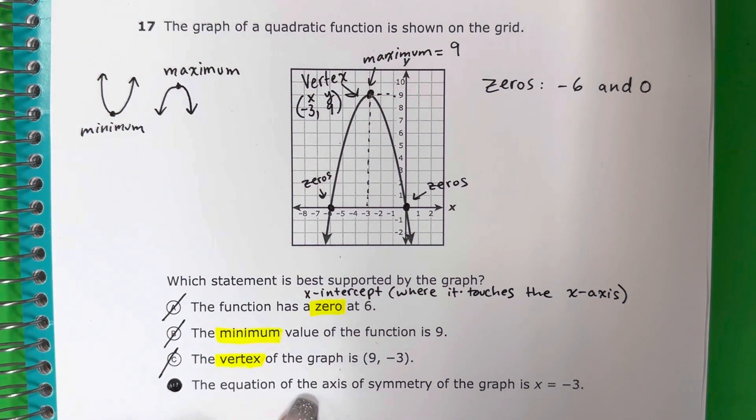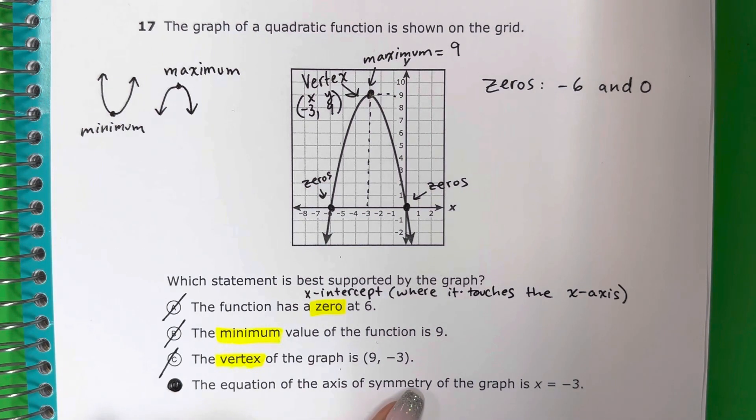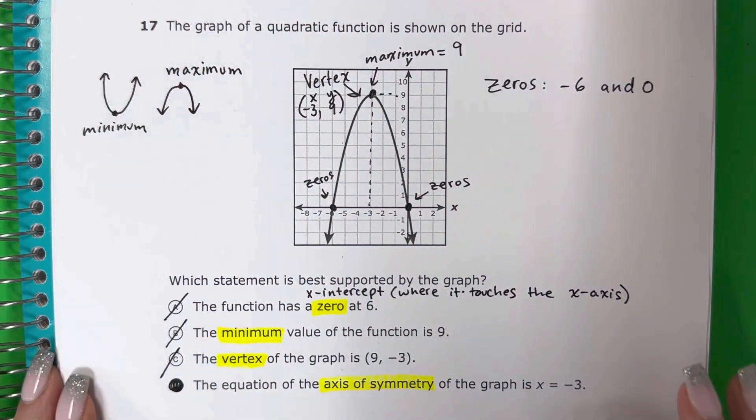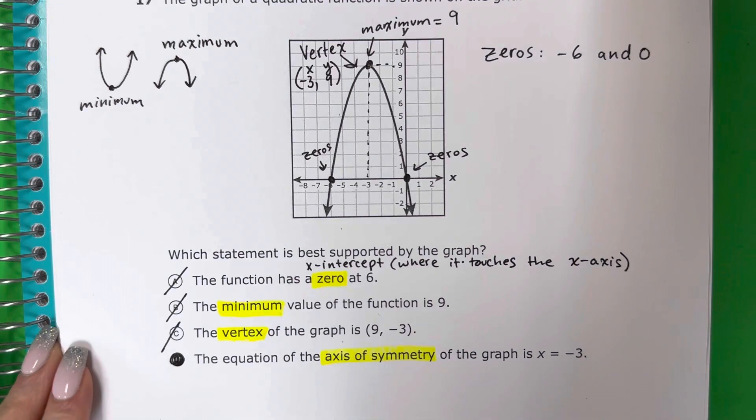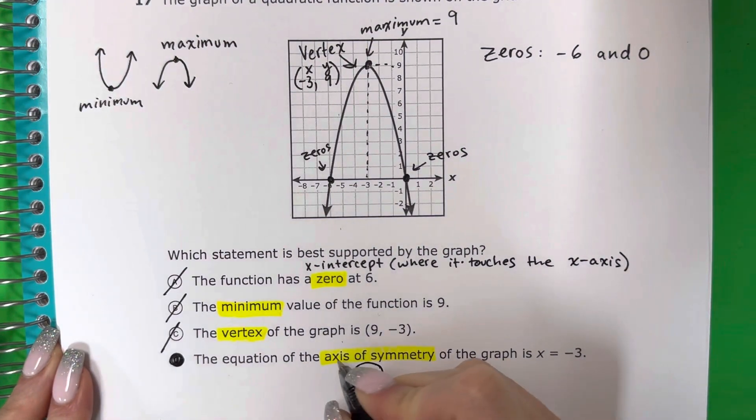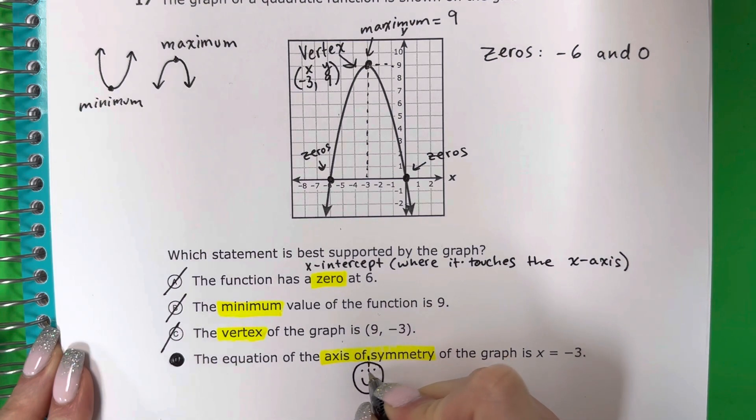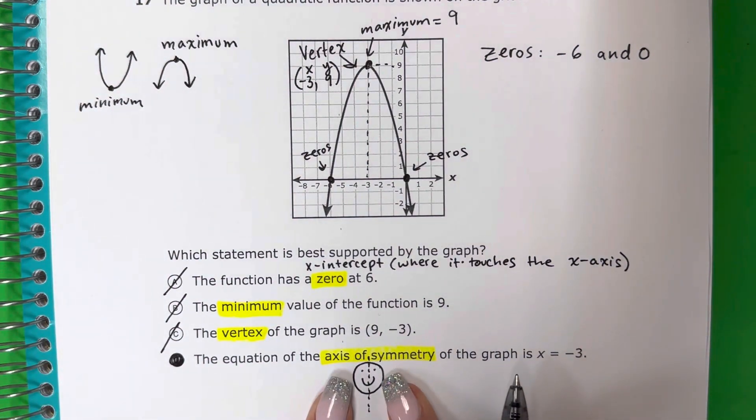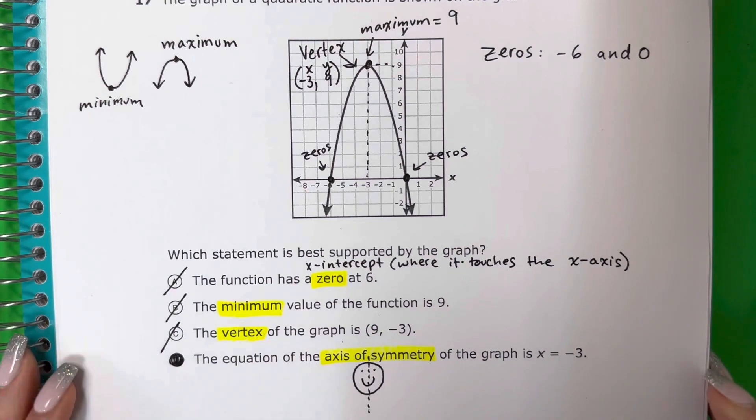The equation of the axis of symmetry of the graph is X equals negative 3. Axis of symmetry. So what I want you guys to remember for axis of symmetry is think of like a face, a human face. Axis means line, and if you cut the face in half, symmetry means the left side and the right side look the same.